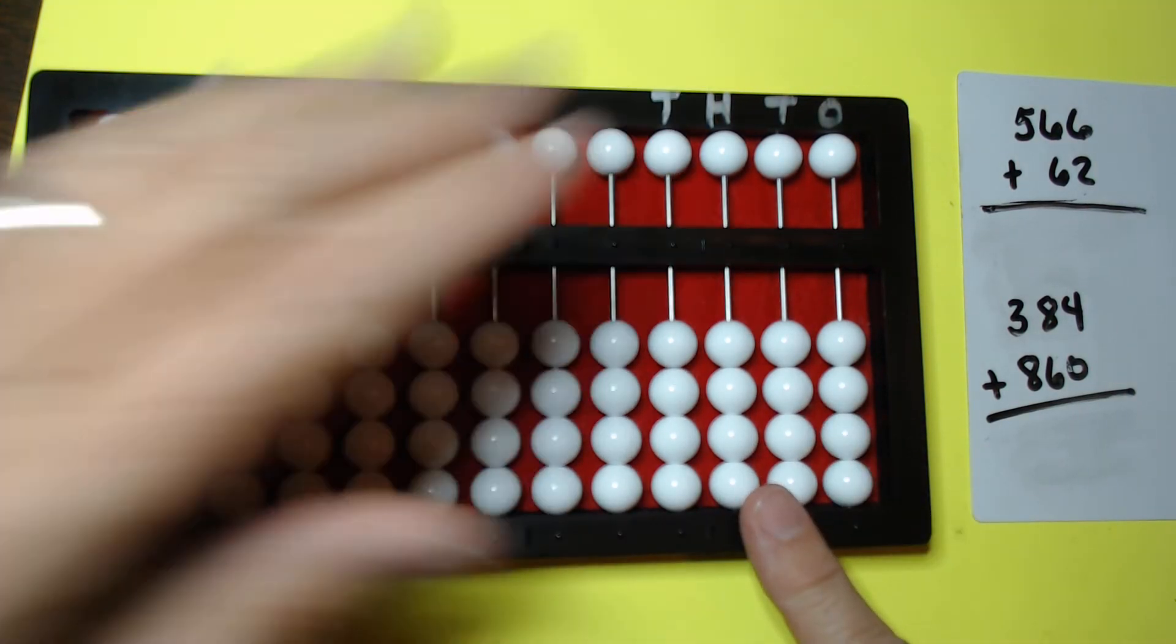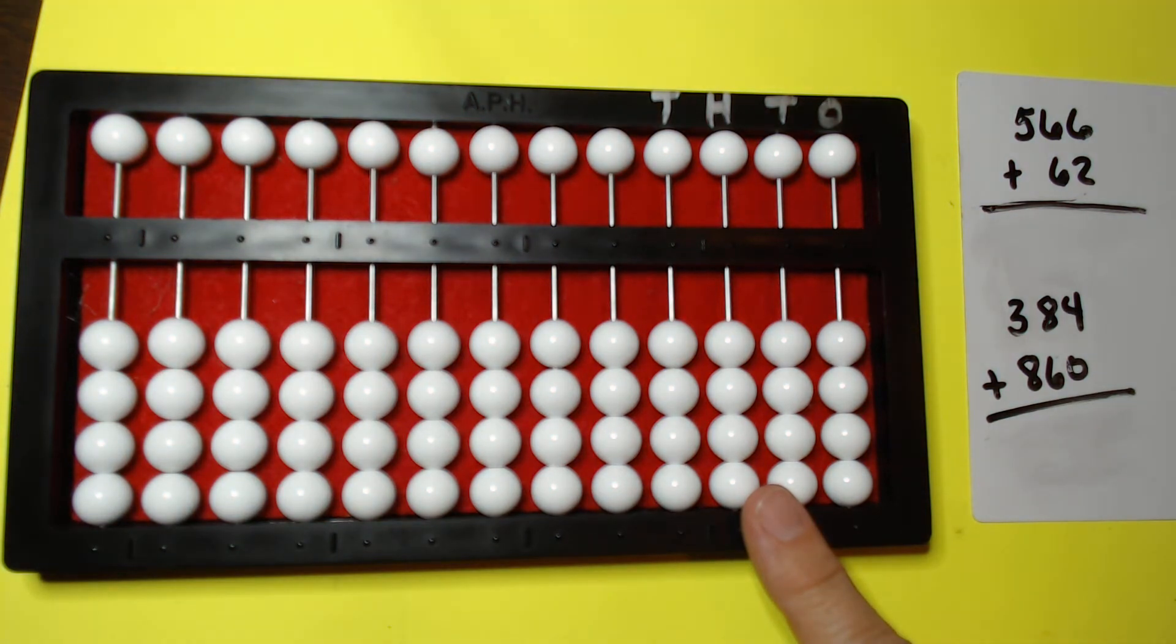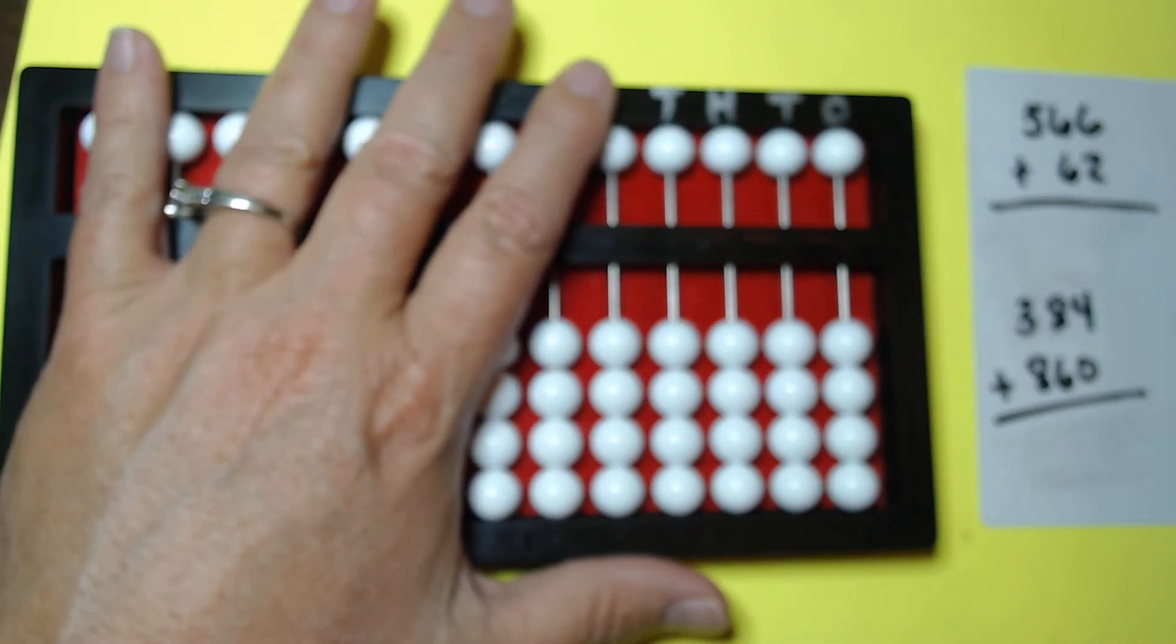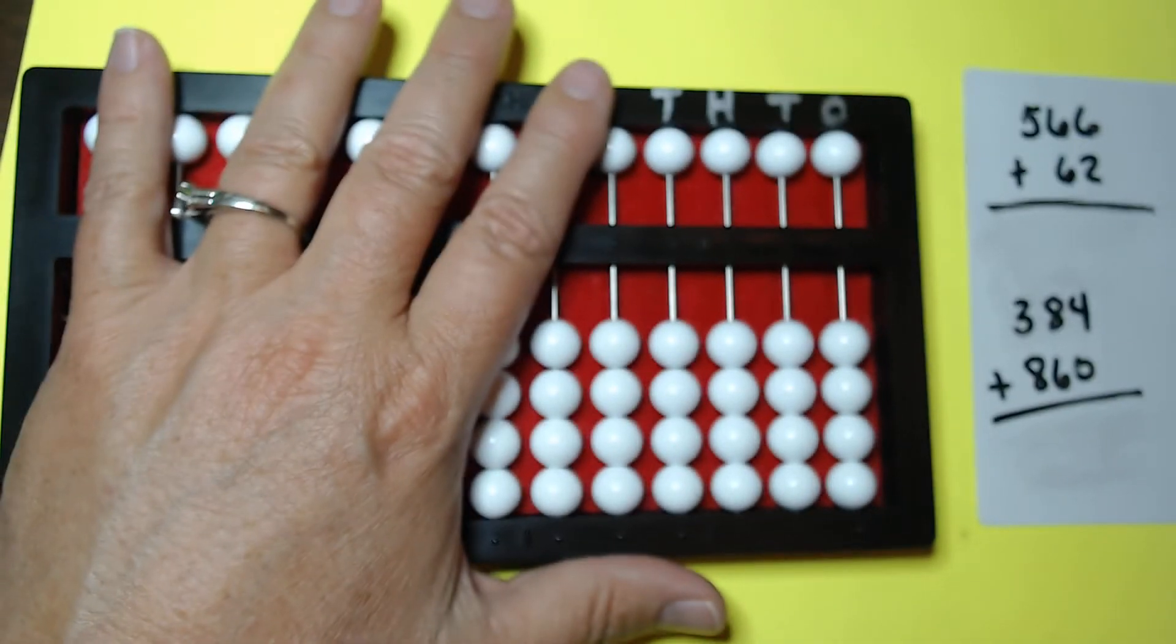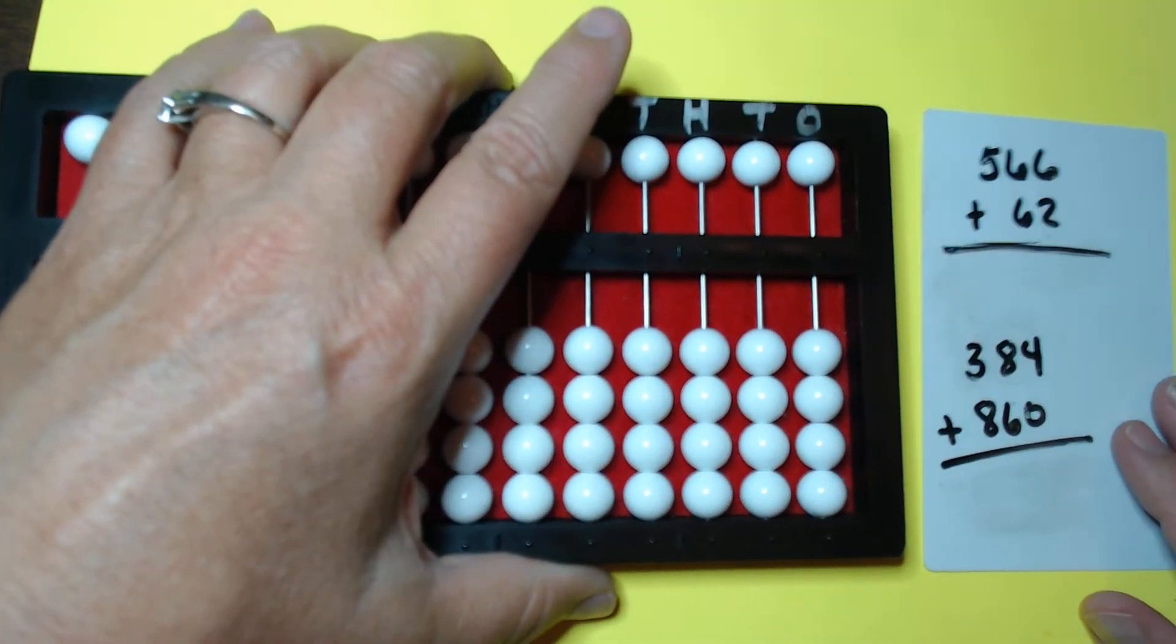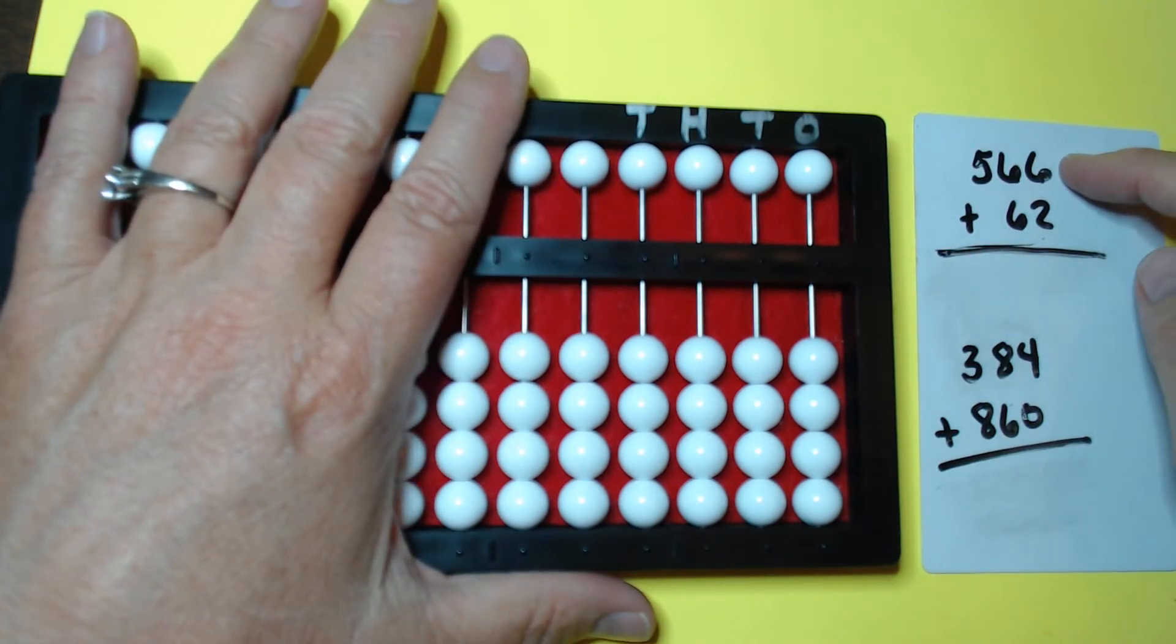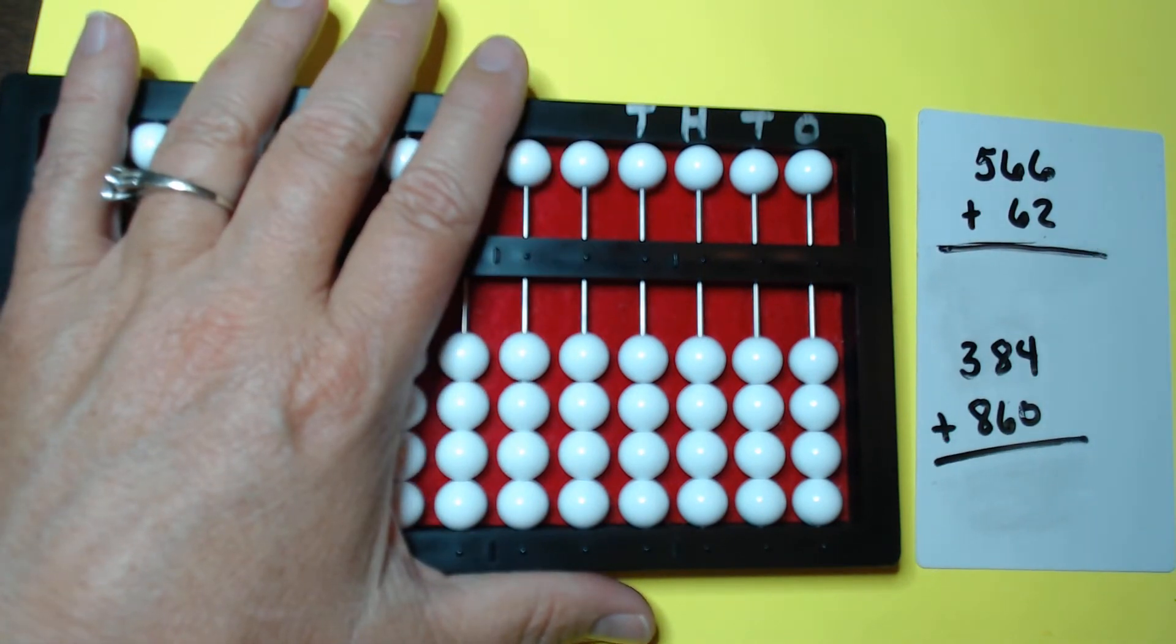At this point you've probably either already watched my other videos or you already know basically how to set numbers, because we are going to pick straight up with adding these numbers here. So we're going to set the first number and then add the second number to it.